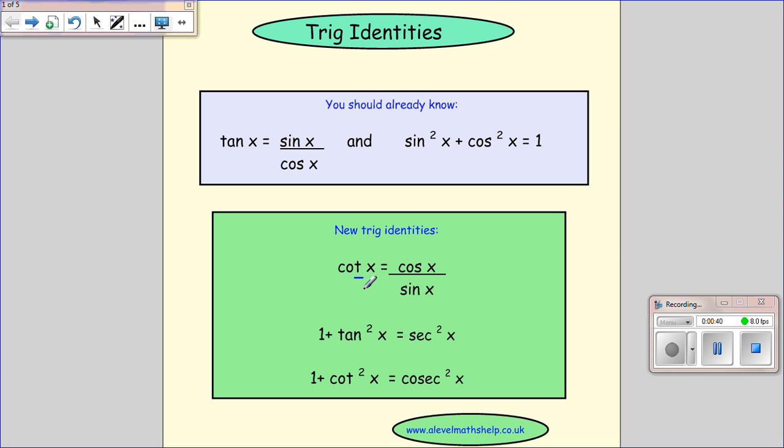So cot x is from 1 over tan x. So if we flip this to be 1 over tan x, we flip that and we get cos x over sin x.